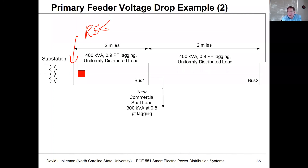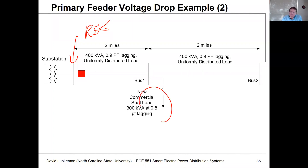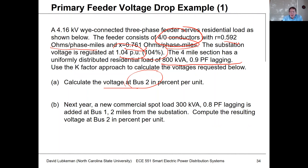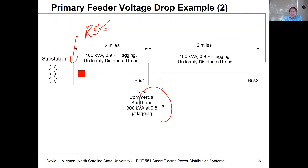We have 4 miles total. You can think of it as 400 kVA at the top of the first 2 miles of the feeder, and 400 kVA on the second 2-mile section, for a net length of 4 miles. The reason I'm bringing that up is later we want to consider the voltage change due to the additional load at bus number 1. Let's see how we apply the k-factors to figure out the net voltage drop and what the bus 2 voltage will be.